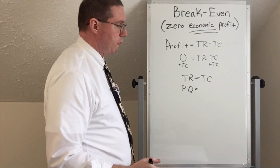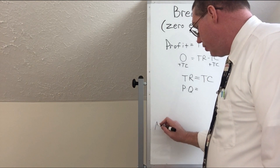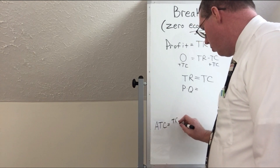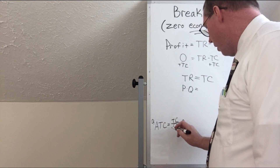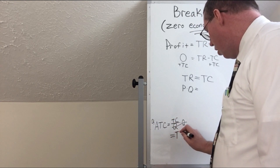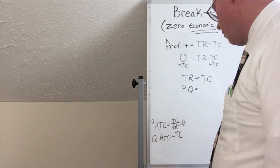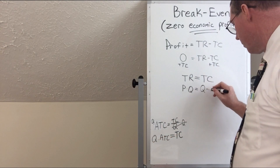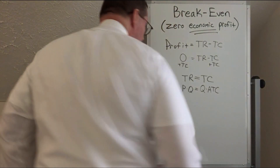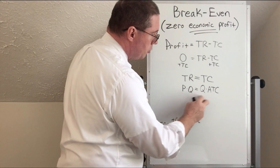One of the things we learned about total cost is this: average total cost is the same thing as total cost divided by quantity. Now if we multiply both sides by quantity, it'll cancel quantity, and what we wind up with is that total cost is equal to quantity times average total cost. So now if we replace total cost with quantity times average total cost, our new break-even equation is: price times quantity equals average total cost times quantity.